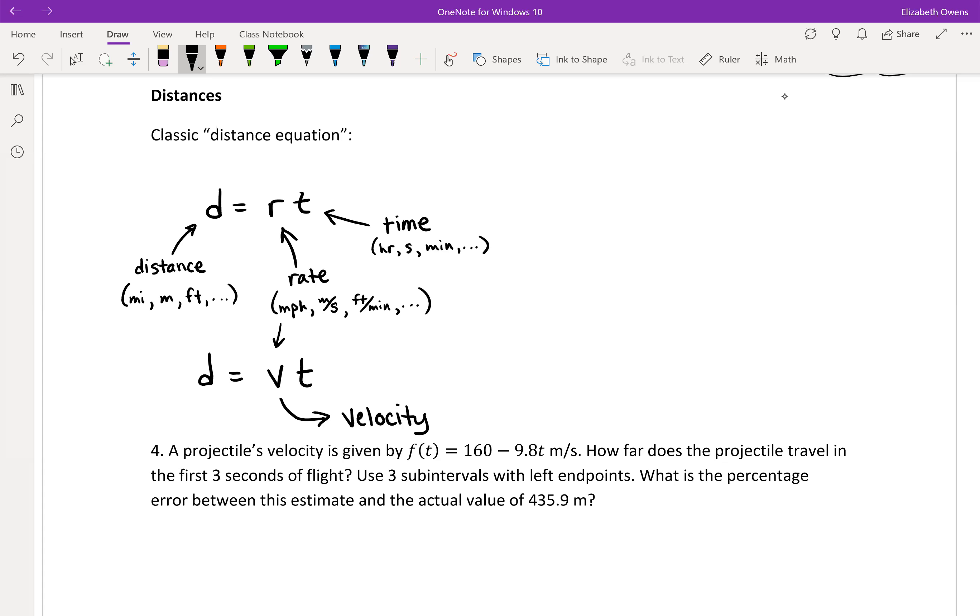Now if we think about this, we are multiplying two quantities there, VT, velocity times time. Let's think about what that would look like if we plotted velocity. So this is time that's passing. And the axis here is going to be a velocity function, velocity as a function of time.